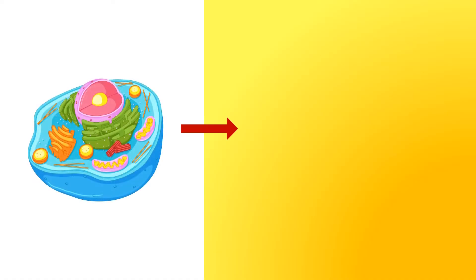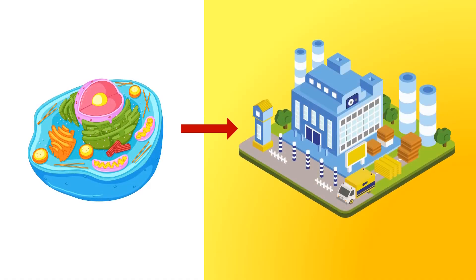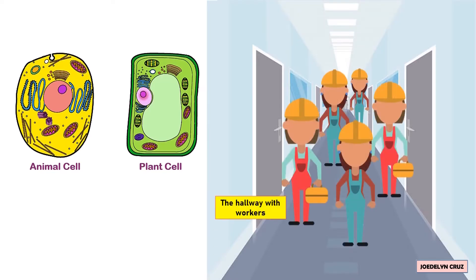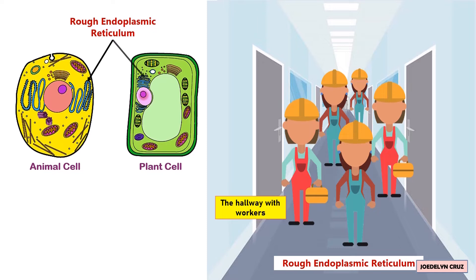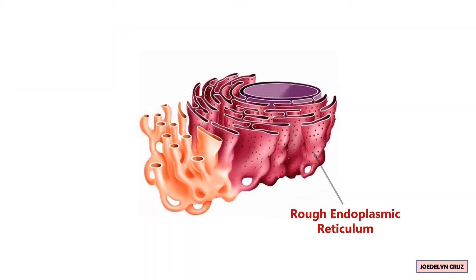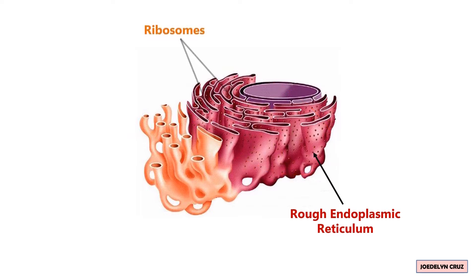In the cell-as-factory analogy, the hallway with workers represents the Rough Endoplasmic Reticulum. This is the close-up view of Rough ER. Rough ER has attached ribosomes on its surface.